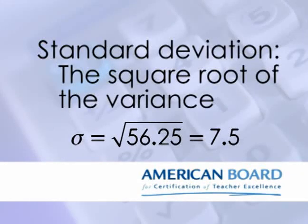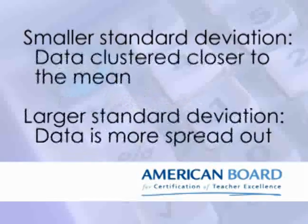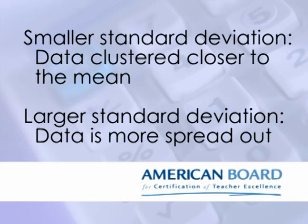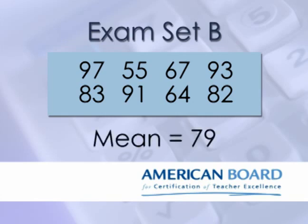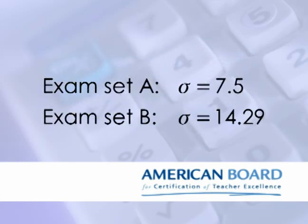The square root of the variance is called the standard deviation of the data. When it comes to variance, standard deviation is the most commonly used measurement. The smaller the standard deviation, the more compactly the data points are bunched together near the mean, and the larger the standard deviation, the more spread out the data is. Let's take a look at another data set of 8 values — the mean of this data set is also 79, but the values are a bit more spread out. If you calculate the variance of the new data set and take the square root, you get a standard deviation of 14.29, which is nearly twice the standard deviation of the original set. So our hunch is confirmed: the second data set contained more variance and the first was more clustered near the mean.